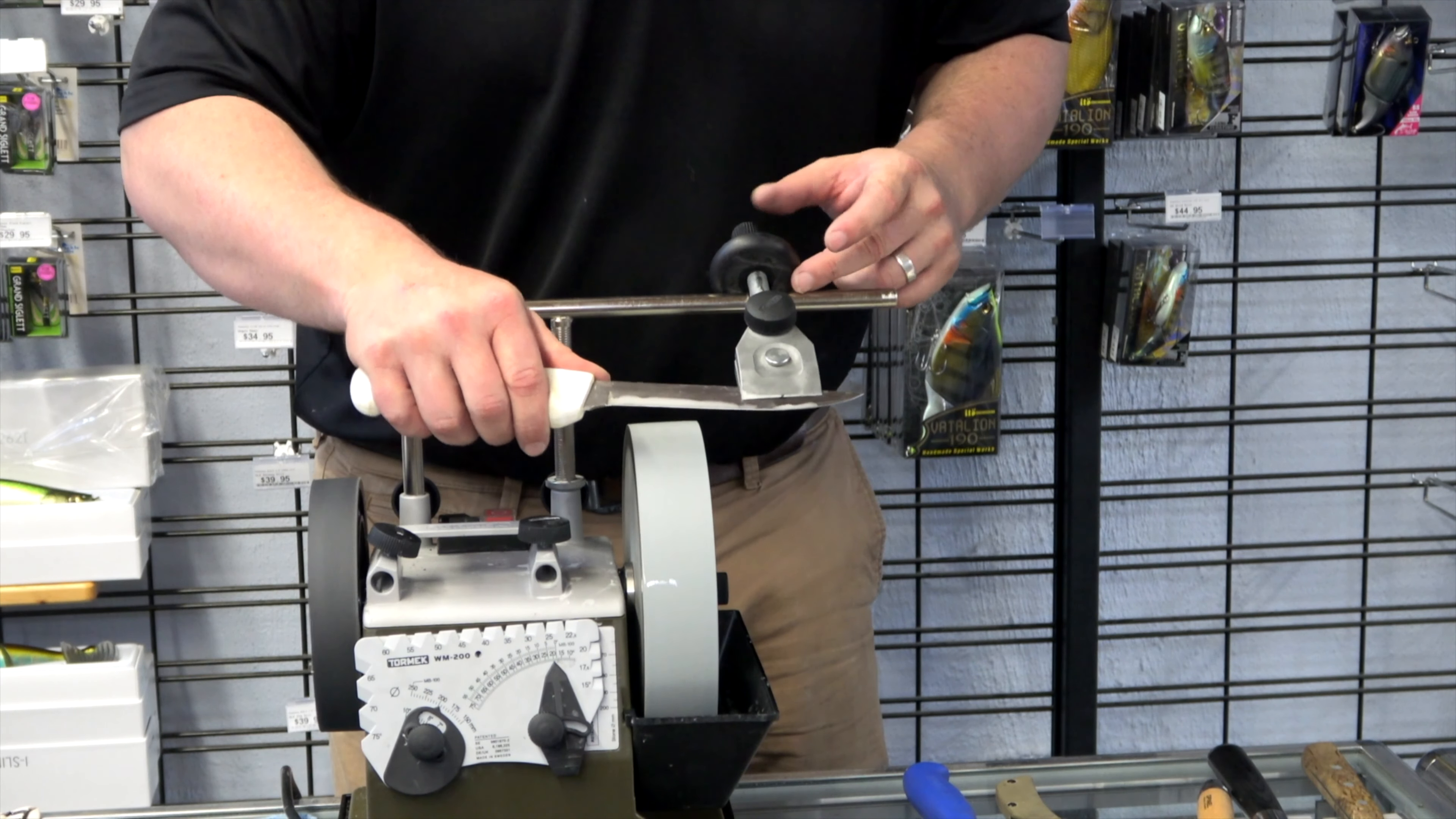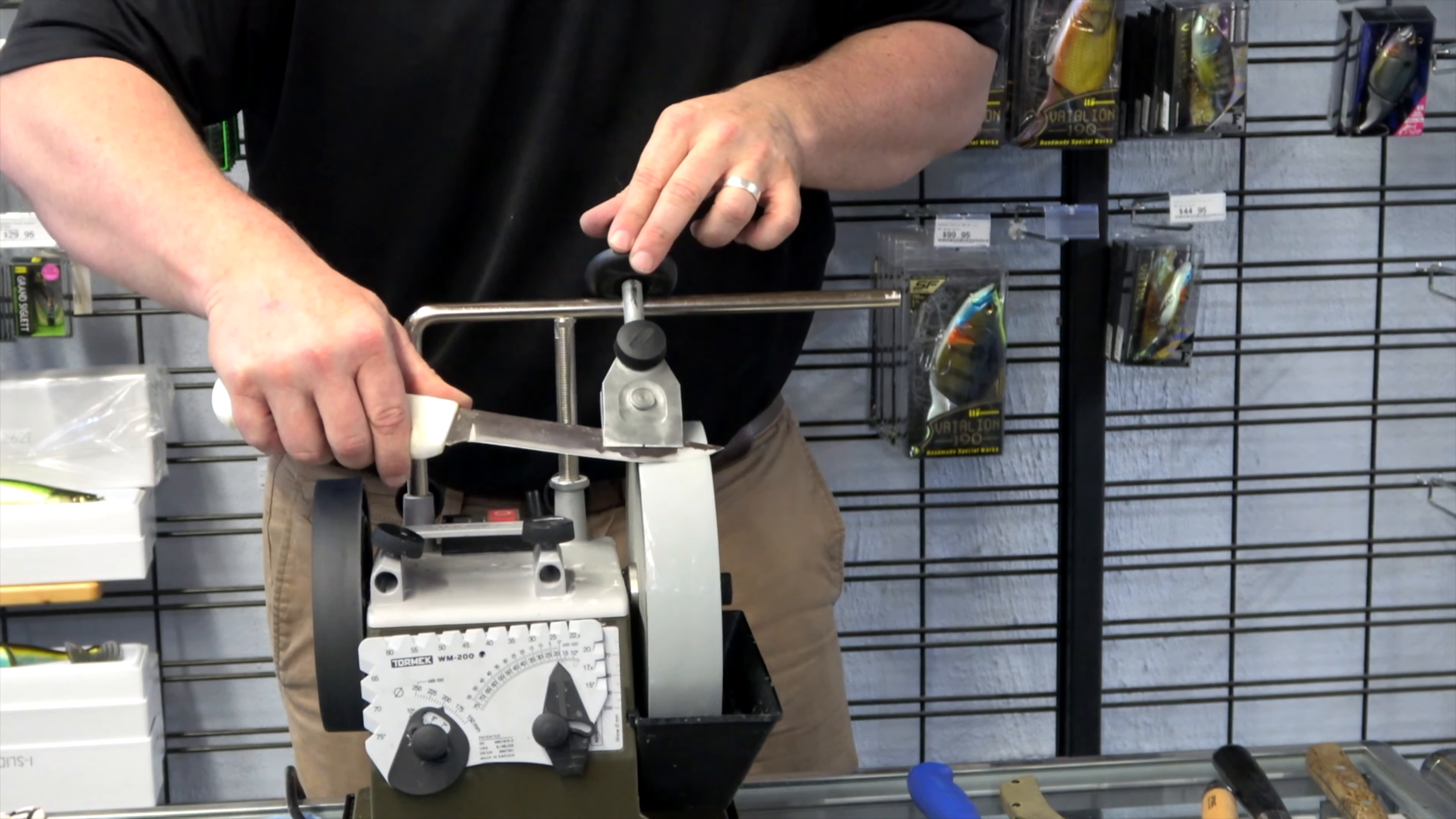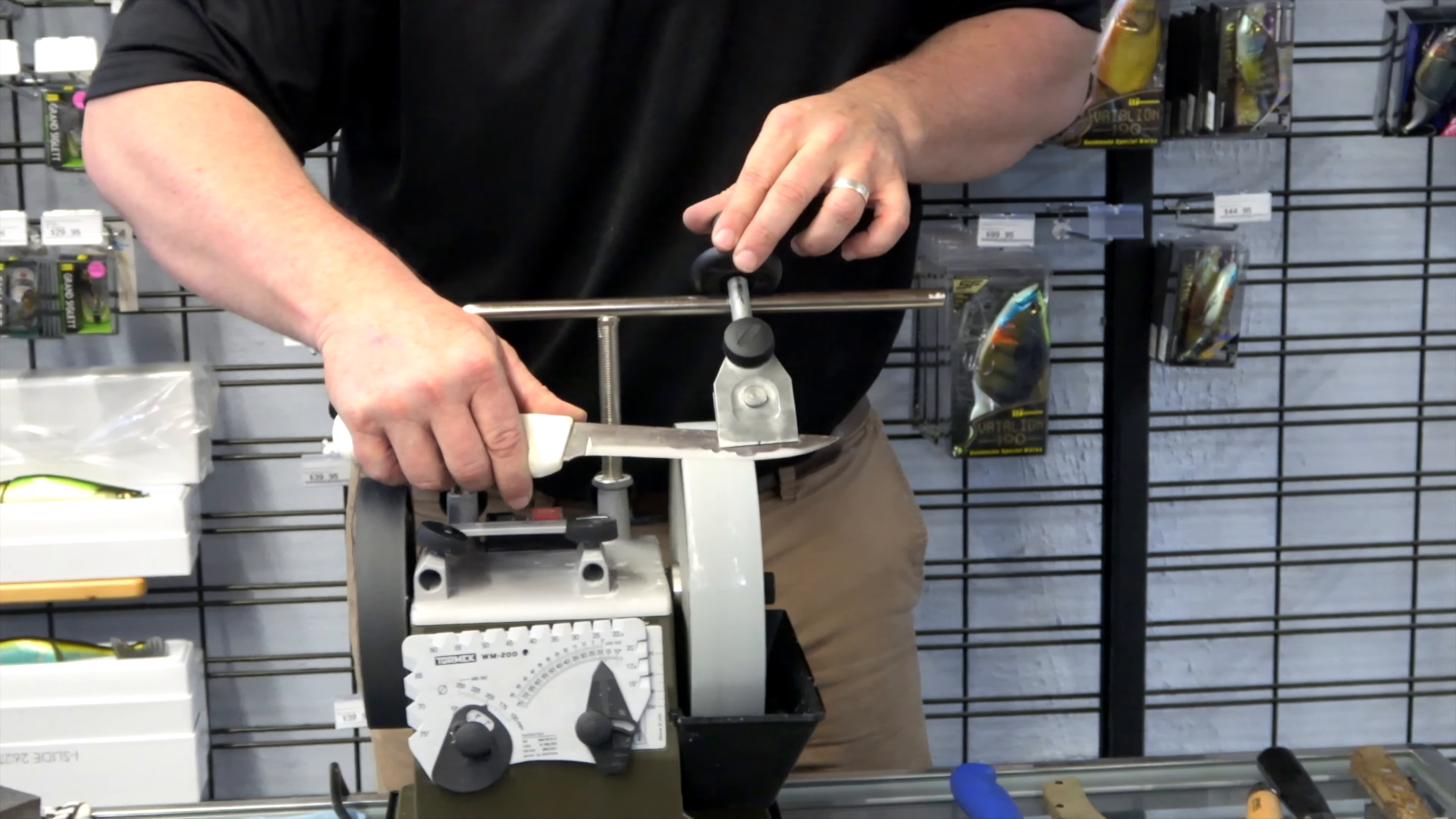We want to keep the jig firmly against the support bar. And when we come to the tip, we're going to be leveraging the knife up to make sure that we're going to keep our edge nice and symmetrical on the tip.